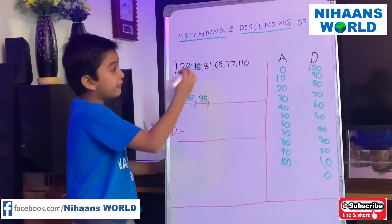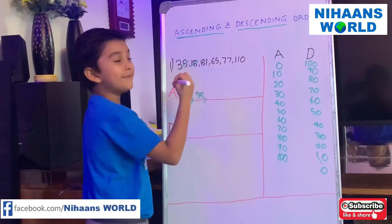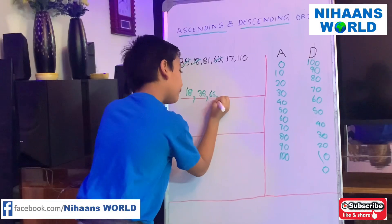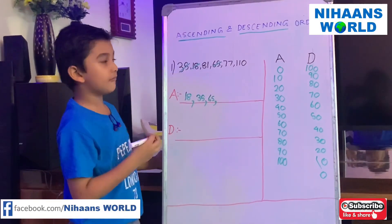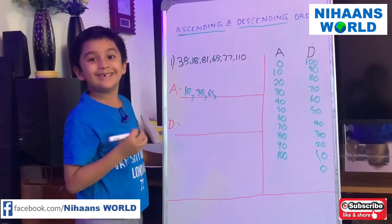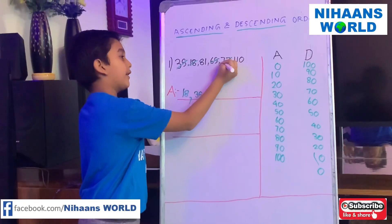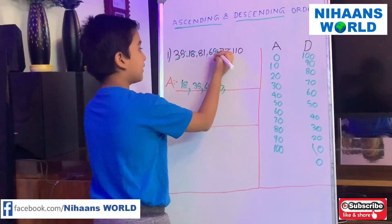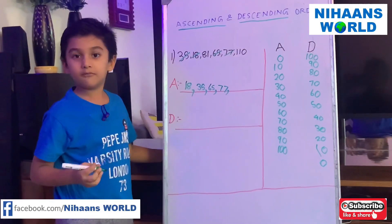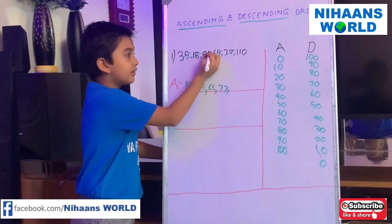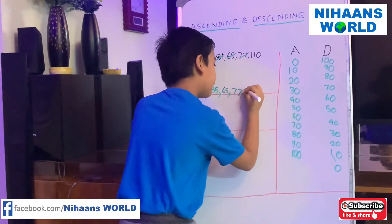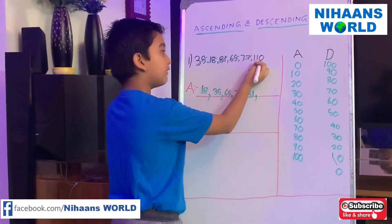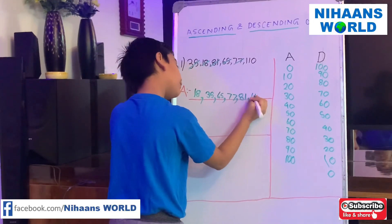Next, will 81 come? No. Will 65 come? Yes! So we write 65. Next, will 81 come? Yes! We cross it out and write 81. And last but not least, we write 110 here.